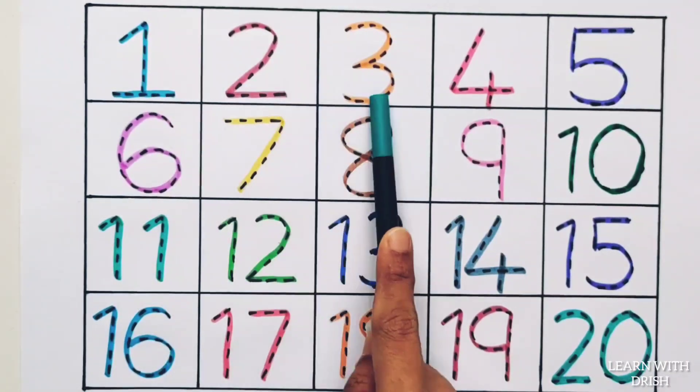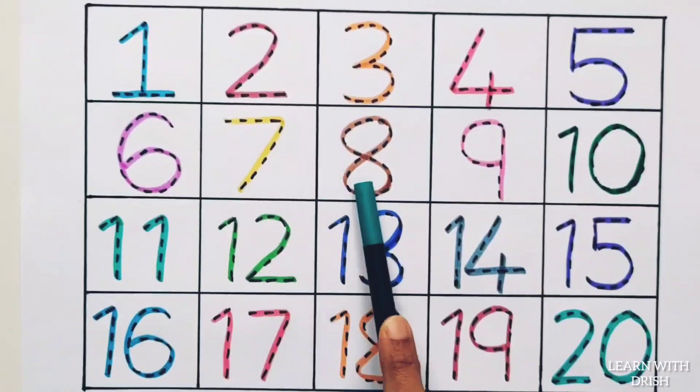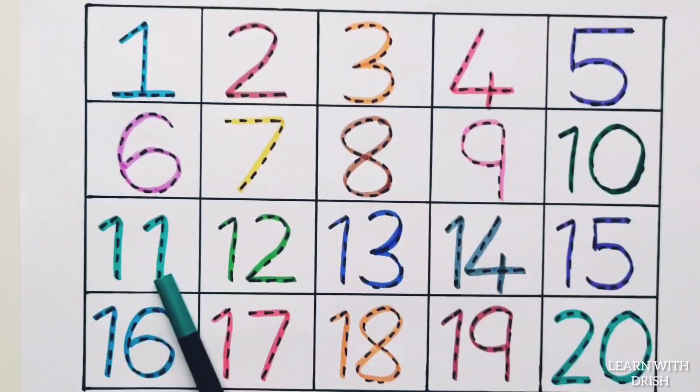1, 2, 3, 4, 5, 6, 7, 8, 9, 10, 11, 12, 13, 14, 15, 16, 17, 18, 19, 20.